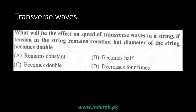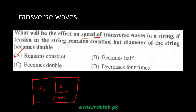What will be the effect on the speed of transverse waves in a string if the tension remains constant but the diameter becomes double? The speed relationship is the square root of tension divided by mass per unit length. If we double the diameter of the string, the mass per unit length changes — but speed depends on mass per unit length, not on diameter directly. There is no direct effect of diameter on speed, so speed remains constant.